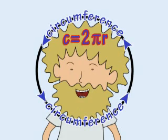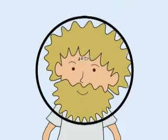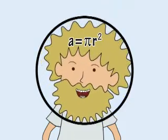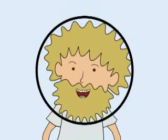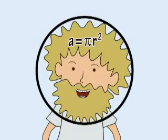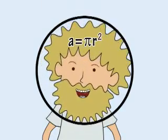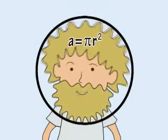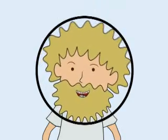2 pi r gives the total distance. Pi r squared, pi r squared, is the area inside there. Pi r squared, pi r squared, is the area inside there.